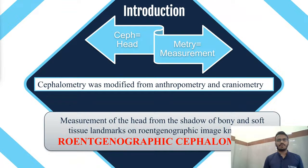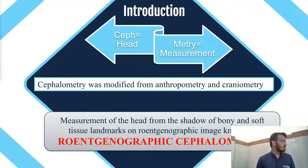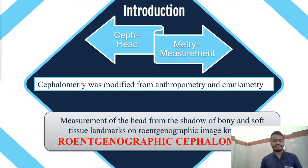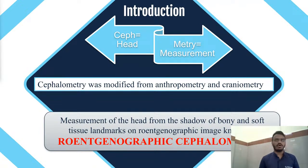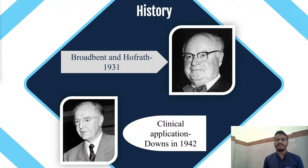Cephalometrics is a word that can be divided into two parts: 'ceph' meaning the head and 'metri' meaning measurement. Cephalometry was modified from anthropometry and craniometry. Craniometry is the study of dry skulls and anthropometry is the study of living skulls. What we will consider is roentgenographic cephalometry — the measurement of the head from the shadow of bone and soft tissue landmarks on a roentgenographic image. Cephalometry was first introduced by Broadband and Huprat in 1931, and its clinical applications were given by Down in 1942.